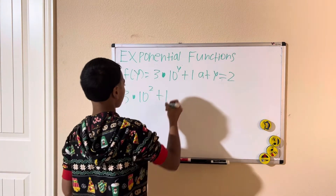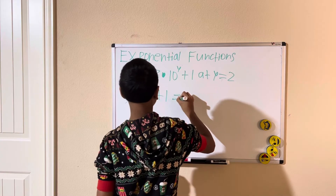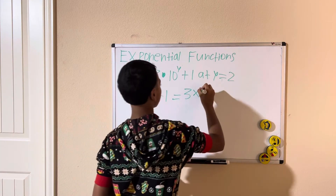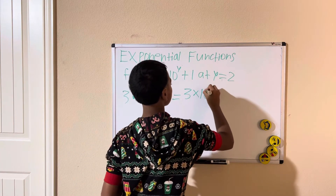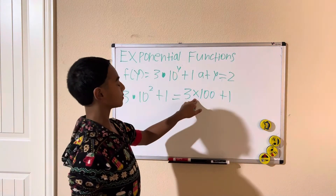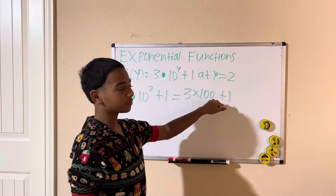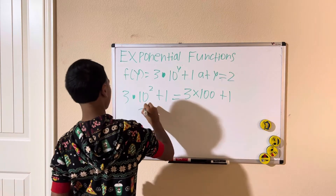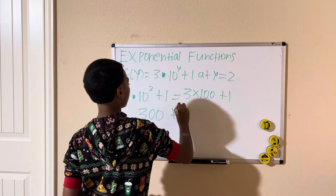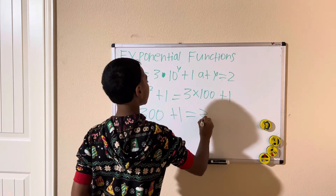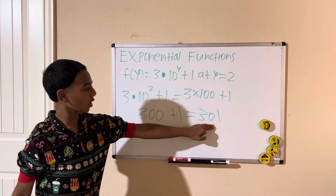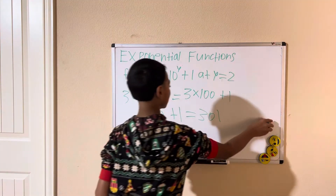Ten squared is 100, so we have 3 times 100 plus 1. Then multiplication before addition: 3 times 100 is 300, and 300 plus 1 equals 301. That is what we get when we evaluate this function.